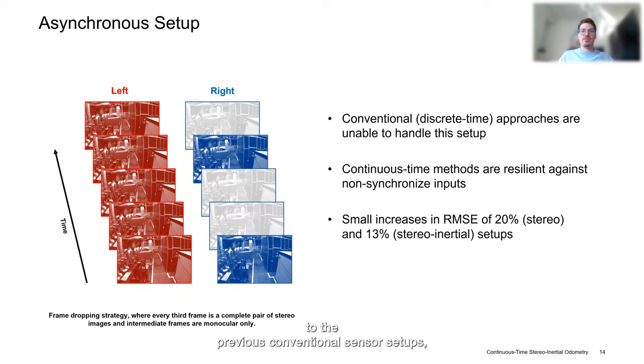In addition to the previous conventional sensor setups, we also evaluated HyperSLAM in a more experimental and asynchronous setup which classical approaches are unable to handle. In particular, we modified the stereo setup to allow incomplete stereo frames to be integrated into the continuous-time optimization, which was achieved by dropping images from the stereo image stream. One of the major benefits of the presented continuous-time approach lies with the circumstance that it is completely agnostic to this type of change. In fact, no modifications to the pipeline were required to support this kind of asynchronous operation. Despite significantly less visual information, the achieved RMSEs only dropped by 20 and 13% in the stereo-like and stereo-inertial-like setup respectively.